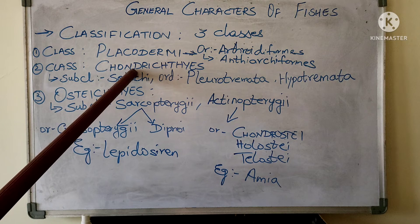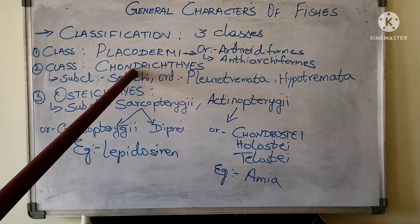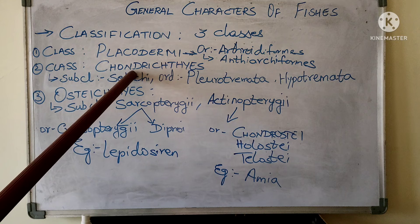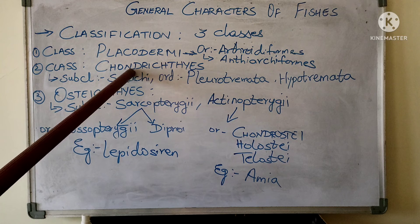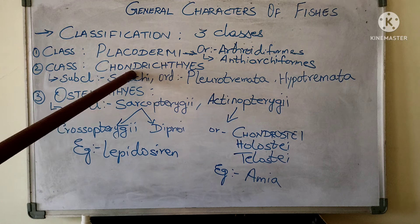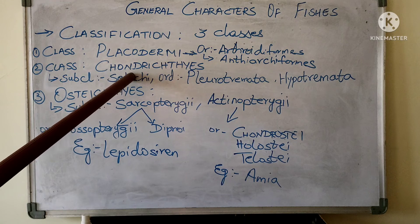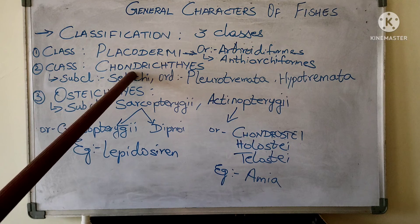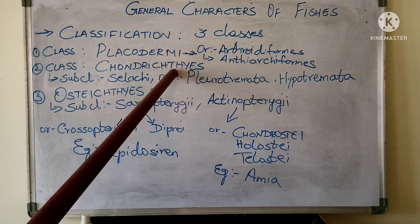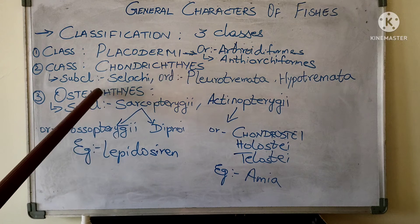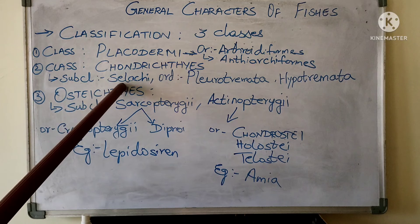In Chondrichthyes, the brain is large and olfactory lobes are present. Ten pairs of cranial nerves are present. Sexes are separate. Fertilization is internal. Development is direct, meaning there are no larval stages. Chondrichthyes is further divided into the subclass Elasmobranchii.